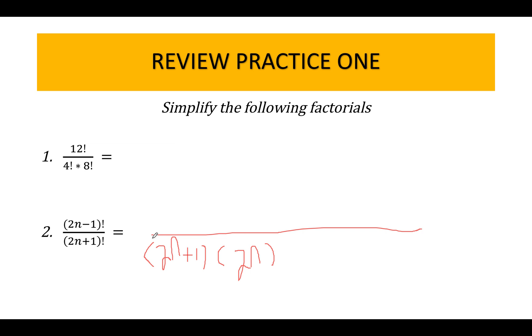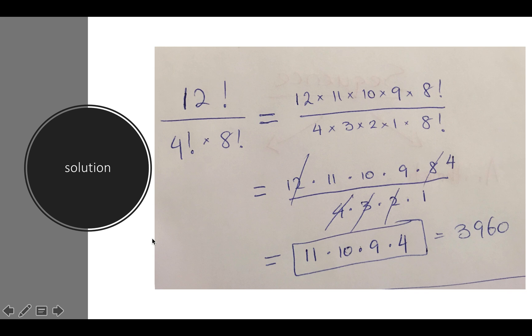Here is my first attempt. I have 12 factorial divided by 4 factorial times 8 factorial. As you can see, I stopped at the 8 factorial. Why did I stop at 8 factorial? Because it is already an 8 factorial in the denominator, so all I need to do is just cross it out. I cross them out.